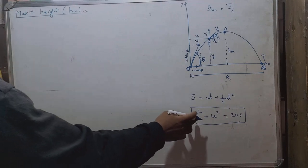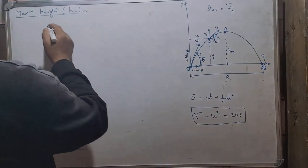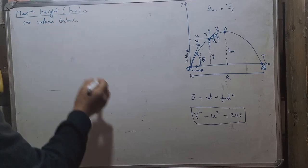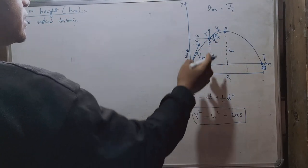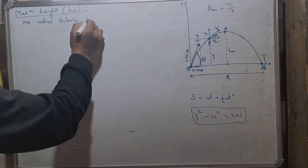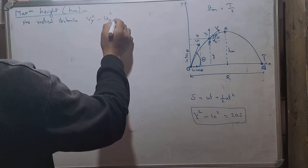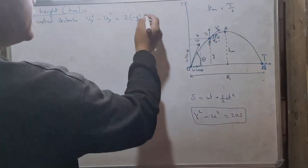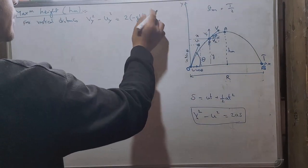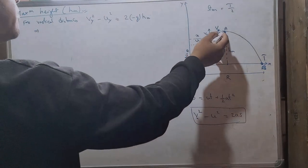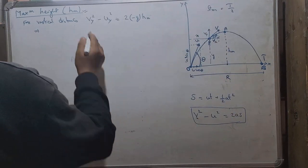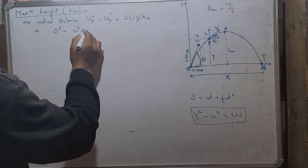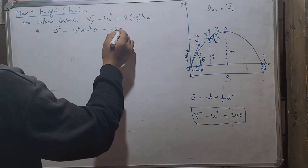Using this equation for maximum height in the vertical direction: V is the vertical velocity at maximum height, which is zero. U becomes Uy, which is U sinθ, so Uy² = U² sin²θ. The acceleration is minus g, and S equals HM. So we get: 0 minus U² sin²θ = 2 × (−g) × HM, which gives U² sin²θ = 2g × HM.